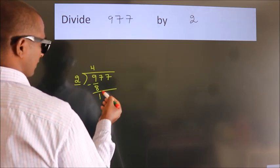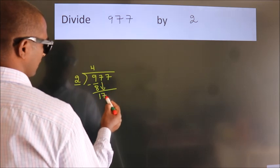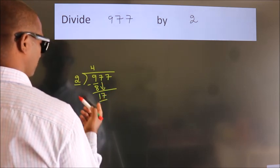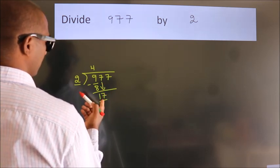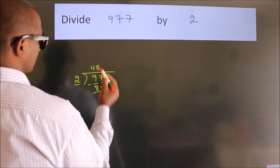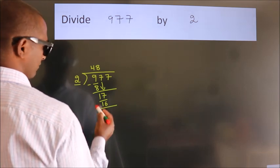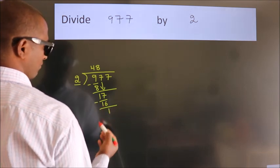After this, bring down the beside number. So 7 down, so 17. A number close to 17 in 2 table is 2 eights, 16. Now we subtract. We get 1.